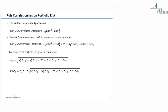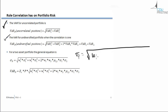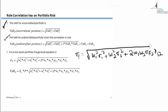Now let us discuss the role correlation plays on portfolio risk. For a two-asset portfolio, the standard deviation of the portfolio is given by: square root of (W1 squared times Sigma1 squared plus W2 squared times Sigma2 squared plus 2 times W1 times W2 times Sigma1 times Sigma2 times Rho_12), where Rho_12 is the correlation coefficient between asset one and asset two.